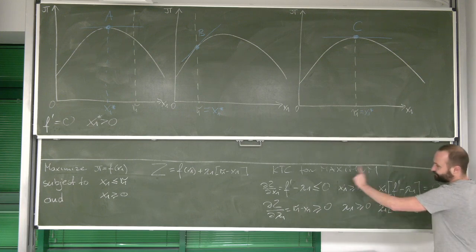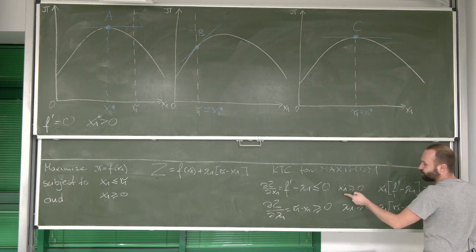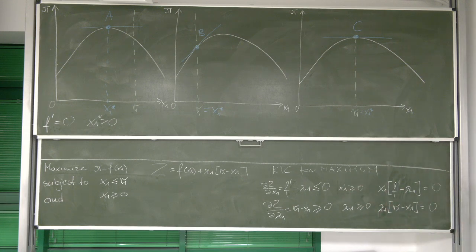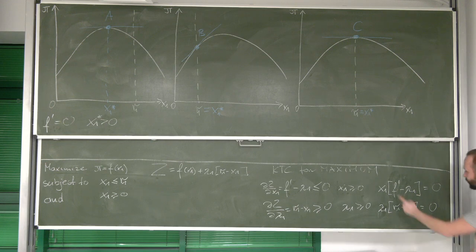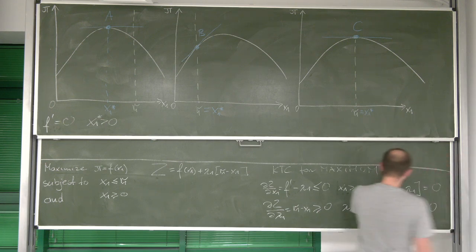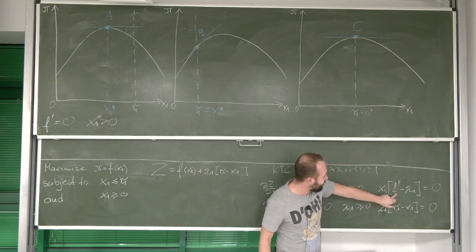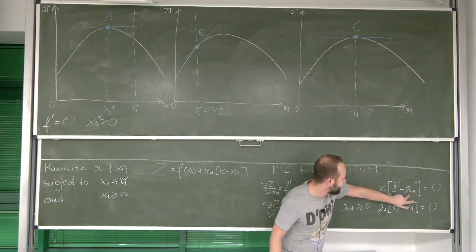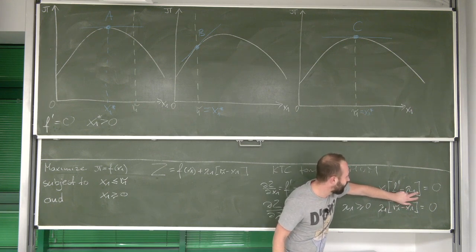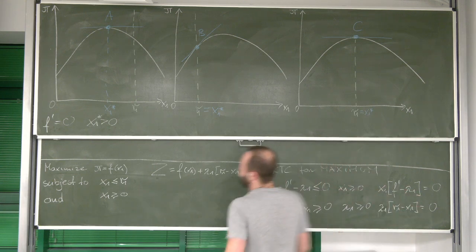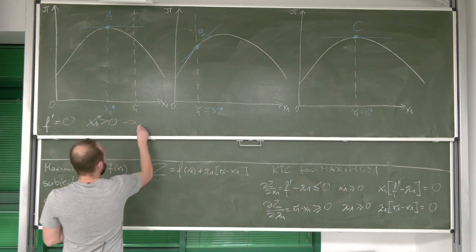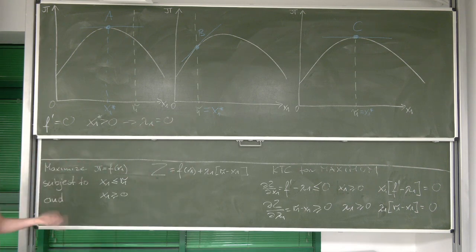Then, we also see that x1 is bigger than zero. And if x1 is bigger than zero, then due to complementary slackness, we know that this expression must be equal to zero. However, with f prime being equal to zero, we see that negative lambda 1 must be equal to zero, or that lambda 1 must be equal to zero as well.